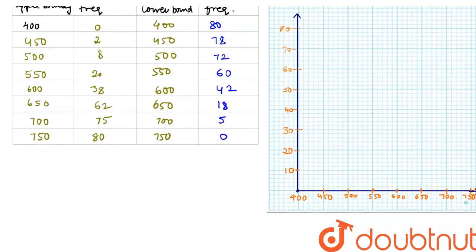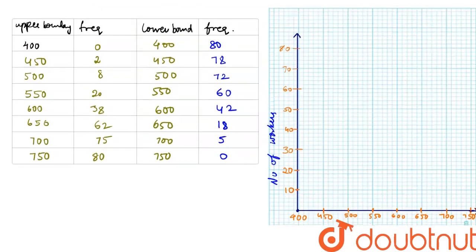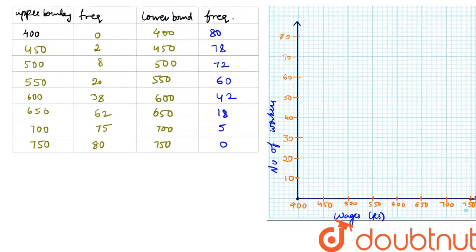On the graph paper, the x-axis shows wages in rupees and the y-axis shows number of workers. Now let us draw the upper bound curve. At 400 the upper bound is 0, at 450 we are at 2, and at 500 we are at 8, which is approximately here on the graph.